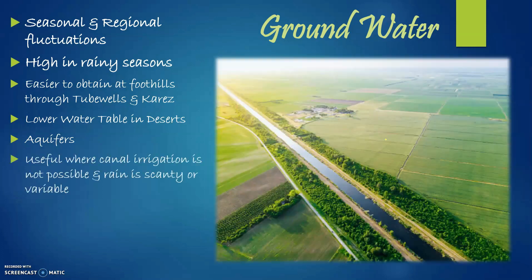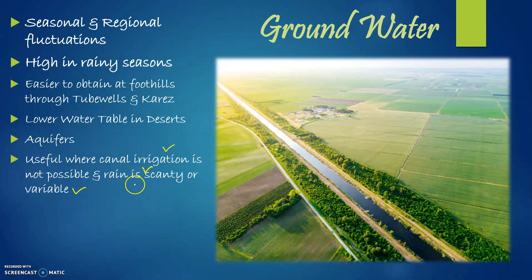Another important point is that groundwater is useful where canal irrigation is not possible, or where the rain is scanty or variable. Since rainfall varies and there can be shortages in certain places, groundwater can be utilized for irrigation, which ultimately helps agriculture.